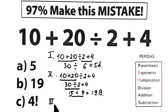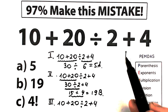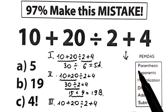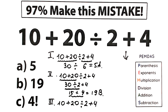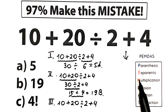We have 10 plus 20 divided by 2, plus 4 — that's our challenge. PEMDAS works from the top to the bottom: Parentheses, Exponents, Multiplication, Division, Addition, and Subtraction. Parentheses have the highest priority; addition and subtraction have the lowest priority. Let's scan which elements we have in this challenge.